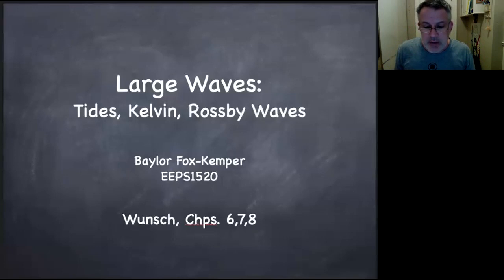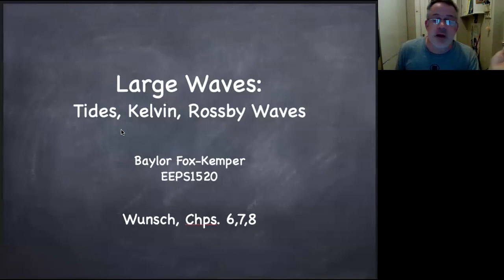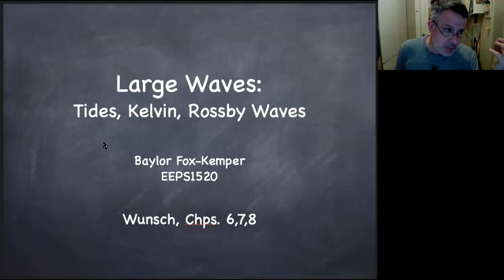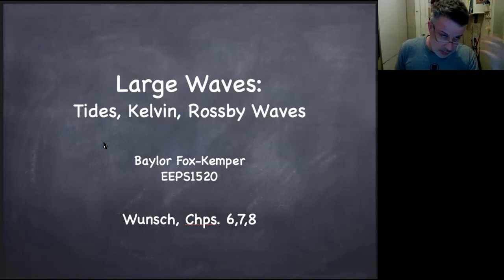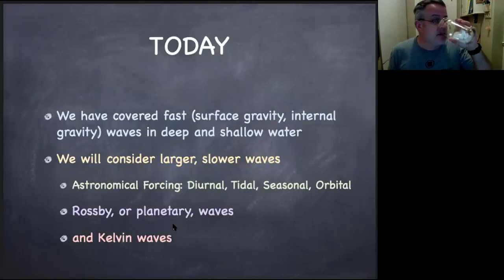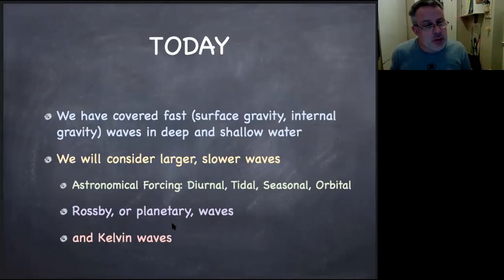You might wonder how such large waves would get forced. One of the obvious ways is that they're forced by the tides, because the whole planet on a planetary scale experiences the tides. The waves most excited by that tidal forcing are the waves that are of the right frequency and the right size to match up with that forcing. So today we've covered surface gravity, internal gravity waves, and deep and shallow water. We're now going to consider larger, slower waves.